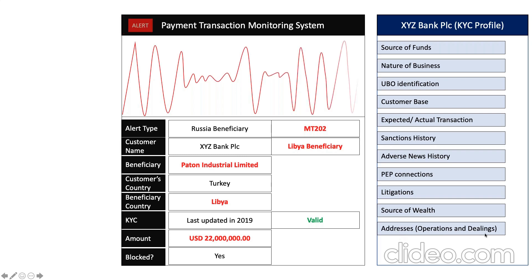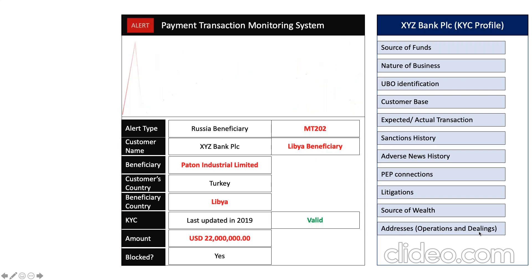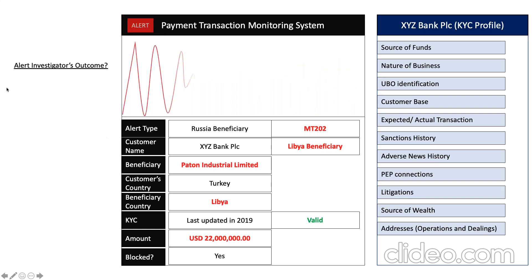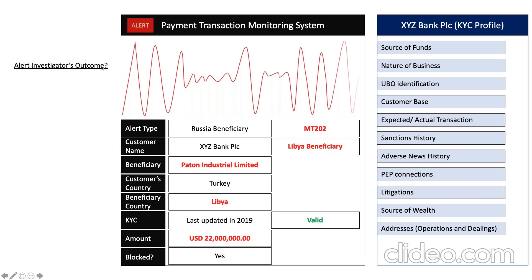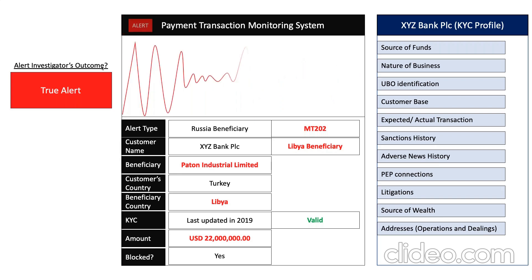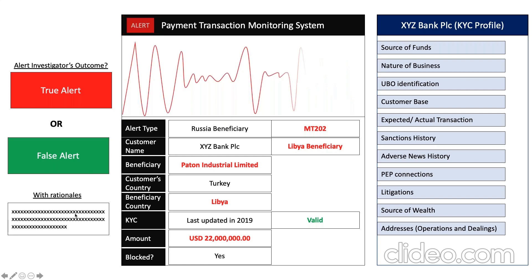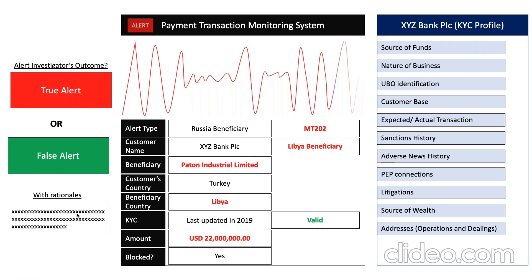If you see Libya listed under the customer's operations and dealings, the KYC is signing off to say yes, we know they'll be dealing with Libya and Turkey. Then you put your rationale, do your full investigation, and make sure it's not raising any red flags. The alert investigator outcome would either be a true alert — meaning it's very risky and we should stop and control it — or a false alert. Either way, you need to provide your rationale for why it's true or false. This is a basic explanation of what transaction monitoring does.